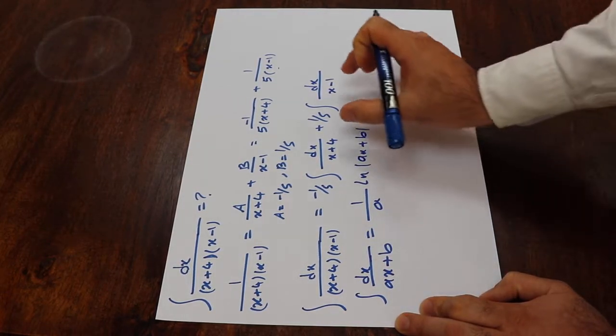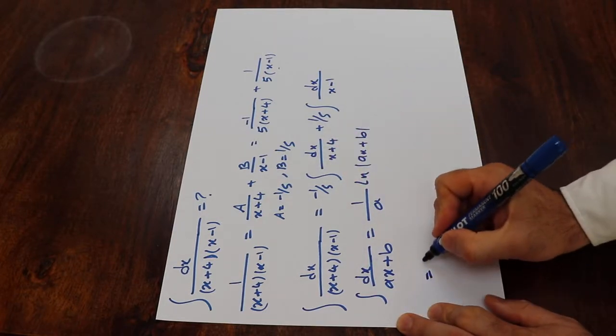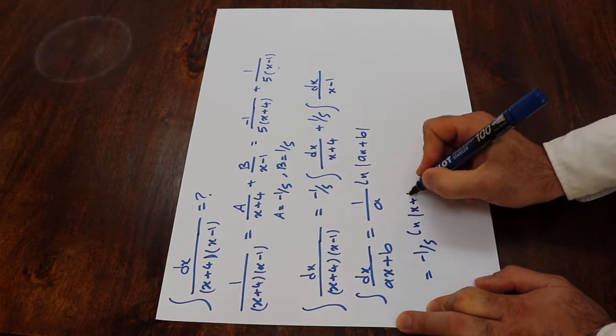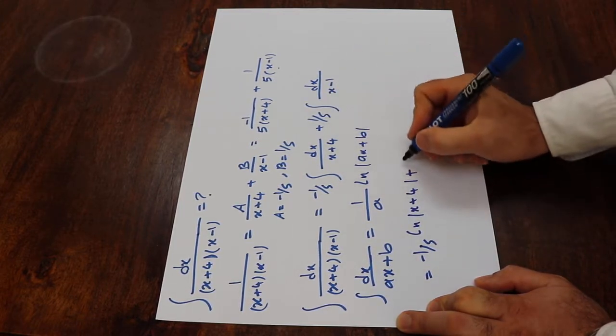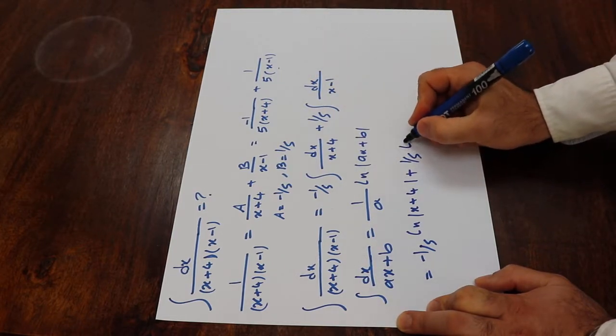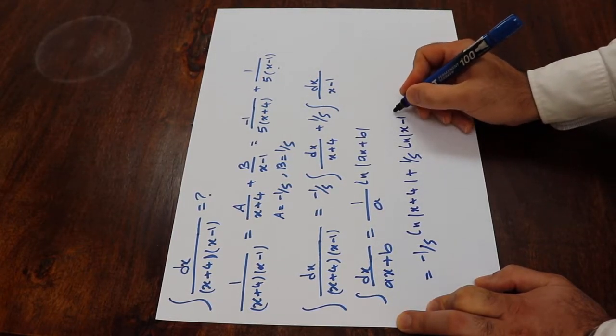So you need to use this formula to solve this integral, which will be equal to minus 1 divided by 5 times ln x plus 4 plus 1 divided by 5. The integral of dx over x minus 1 will be ln x minus 1.